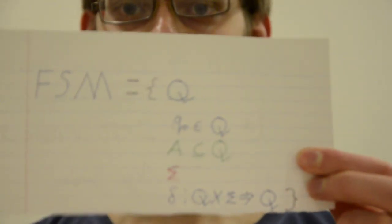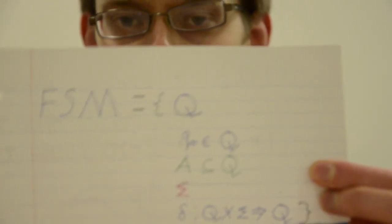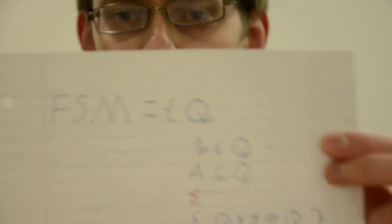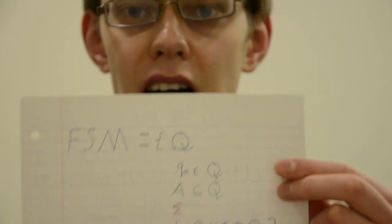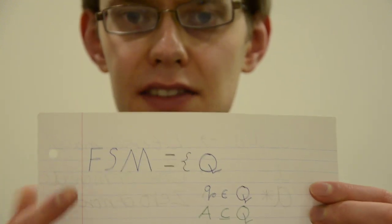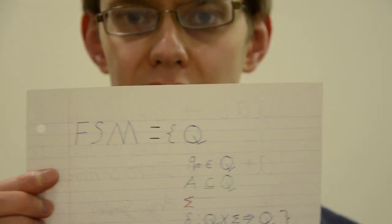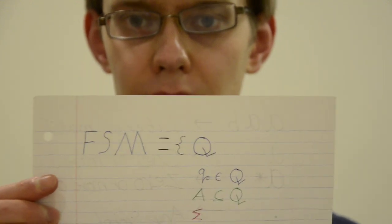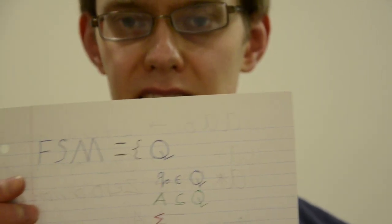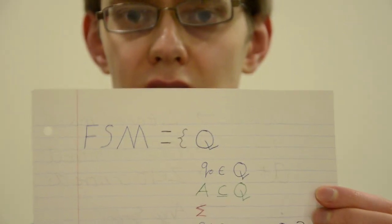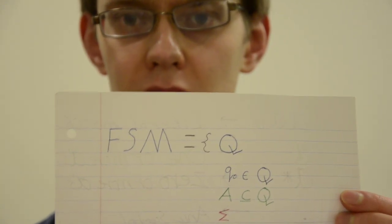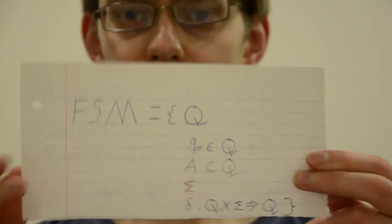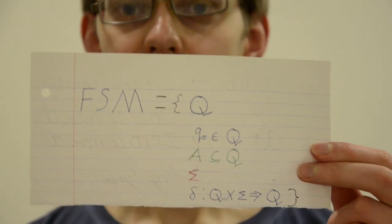Now these are typically defined as 5-tuples. Defined by these five properties which I will explain now. Firstly there is a set of states that the automata can be in. And these will correspond to every state that the automata will move into or try to match as it's running through execution. Then there is an initial state which is obviously a member of the total states.